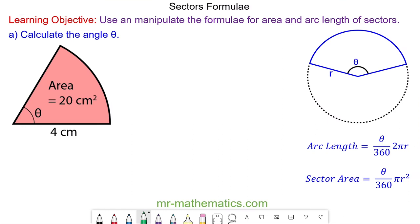Hello and welcome to our lesson on rearranging the sectors formulae. We saw in the two previous lessons that the formula for the arc length of a sector is theta over 360 multiplied by 2πr, and the formula for the area of a sector is theta over 360 times πr².